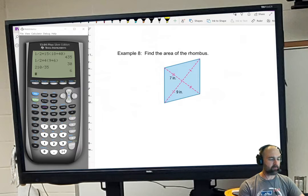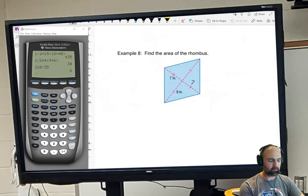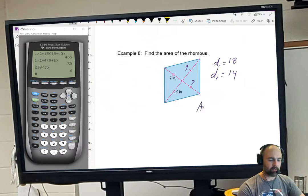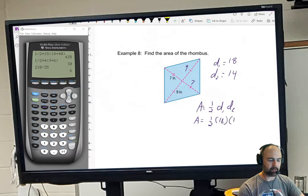So let's see. Find the area of the rhombus. Well, if these two are marked as the same, so that's going to be 7. This one's going to be 9. So it looks like diagonal 1 is 9 plus 9 is 18. Diagonal 2 is 7 plus 7, which is 14. Again, don't get caught up on which one's d1 d2. Doesn't matter. So area equals one half d1 times d2. One half times 18 times 14.